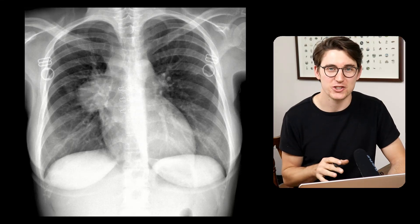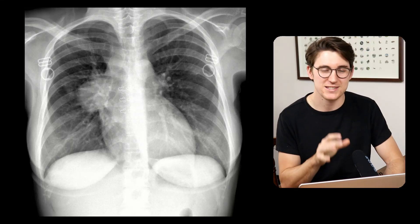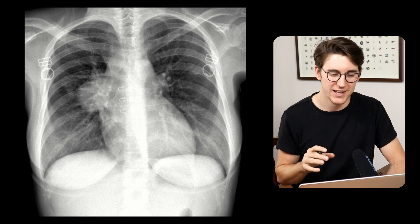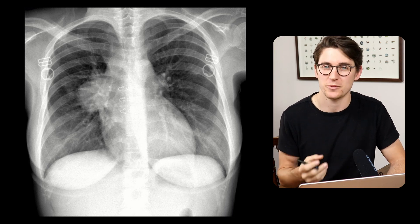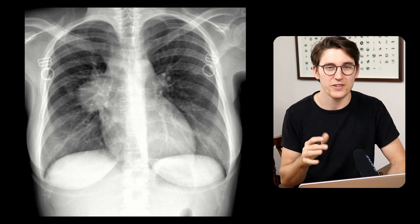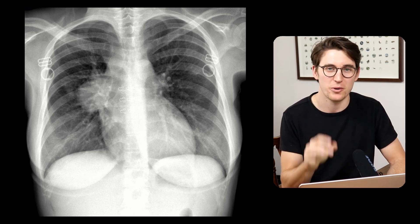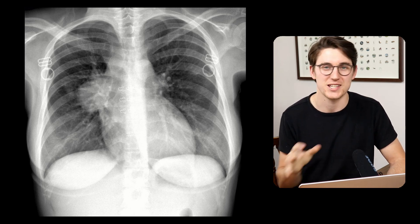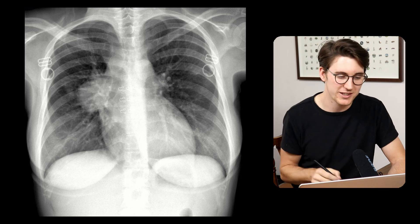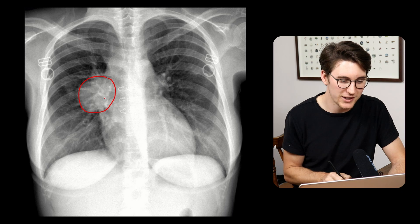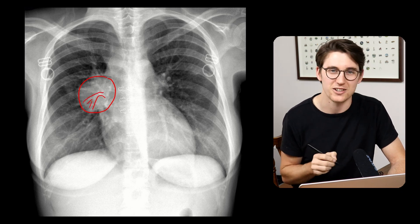Here's a quick and simple way to determine whether a mass projected over the hilar region on a chest radiograph is in fact within the pulmonary hilum or not. All you have to do is ask yourself one question: whether you can clearly see the pulmonary vasculature separate from the mass. Looking at this x-ray, we can see the mass in the hilar region, and if we look closely, we can clearly see the pulmonary vasculature distinct from the mass itself.